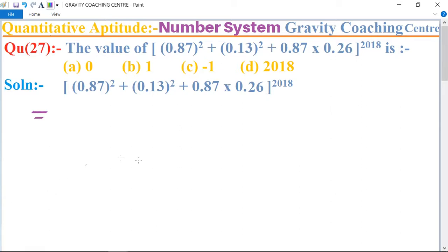So in this question, first we change into the form of a plus b whole square. First write 0.87 whole square plus 0.13 whole square.